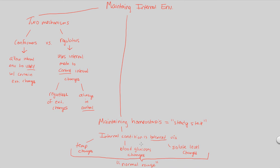People think of homeostasis as simply staying normal all the time — but that's not quite right. Homeostasis involves change, but that change is regulated in a way that homeostasis is still maintained at a steady state. Think of it as a set point that the body recognizes and tries to maintain. The best way to understand it is to look at a simple homeostatic mechanism.